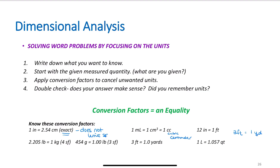2.205 pounds equals one kilogram — that is four sig figs on the 2.205 side; the one kilogram is exact. Alternatively, 454 grams is exactly one pound, with three sig figs. You need to be able to convert distance, mass, and volume between the metric and U.S. systems. One liter equals 1.057 quarts — four sig figs. So 1.000 liters equals 1.057 quarts, and 2.205 pounds equals 1.00 kilogram.